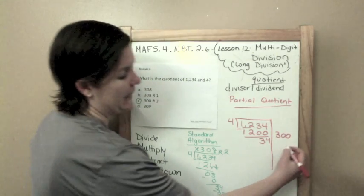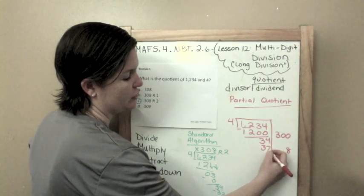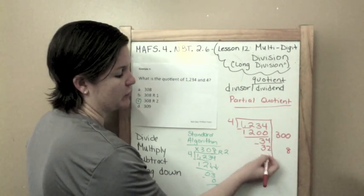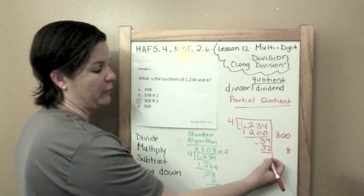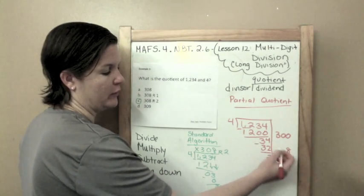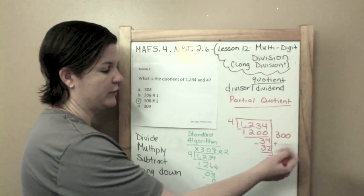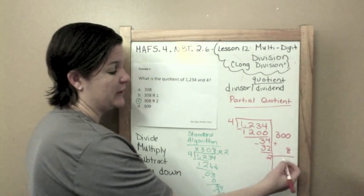Now, about how many times does 4 go into 34? That would be about 8 times, so that would be 32. I subtract those, that would be 2. Can 4 go into 2? No. So you add these guys over here, your partial quotients: 300 plus 8 would be 308. Don't forget your remainder of 2.